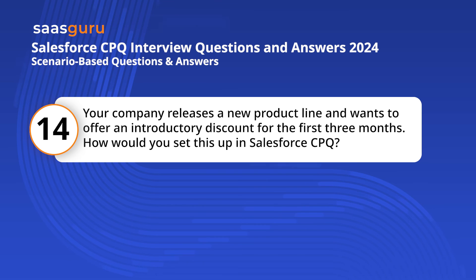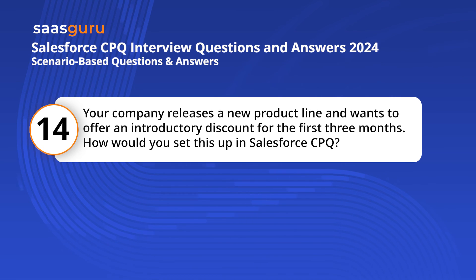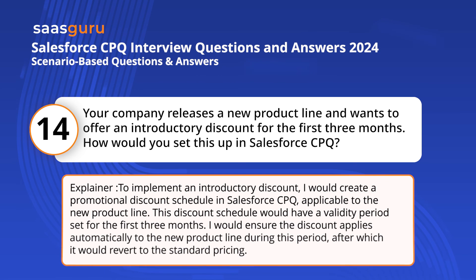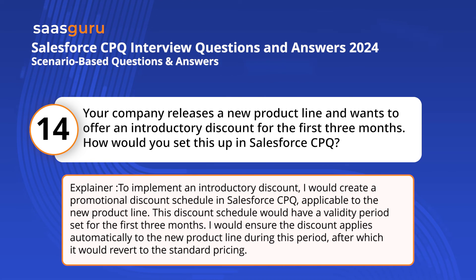Question 14. Your company releases a new product line and wants to offer an introductory discount for the first three months. How would you set this up in Salesforce CPQ? To implement an introductory discount, I would create a promotional discount schedule in Salesforce CPQ applicable to the new product line. This discount schedule would have a validity period set for the first three months, after which it would revert to the standard pricing.